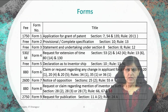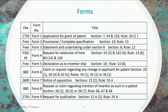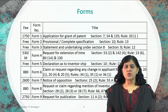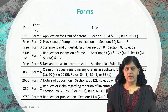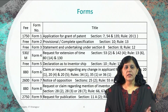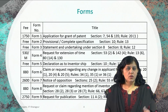Form 1 is for application for grant of a patent, under sections 7, 54, and 135 — and the fee is 1,750 rupees. Form 2 is for provisional or complete specification filing, under section 10, and there is no additional fee since it is given along with Form 1. Form 3 provides a statement and undertaking under section 8, rule 12 — it is also given along with Form 1, so it is free.